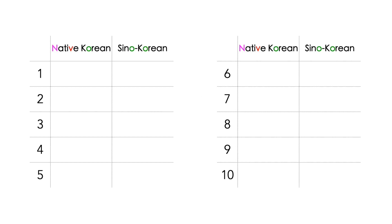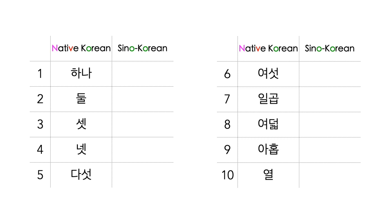There are two ways to say numbers in Korean. In the native Korean way, numbers from 1 to 5 are read 하나, 둘, 셋, 넷, 다섯. 6 through 10 is read 여섯, 일곱, 여덟, 아홉, 열.